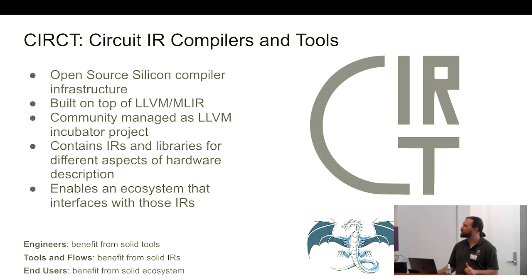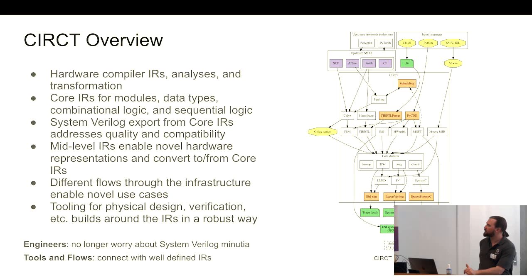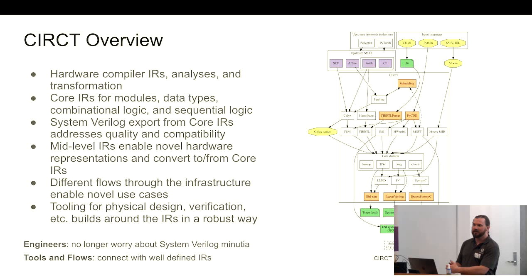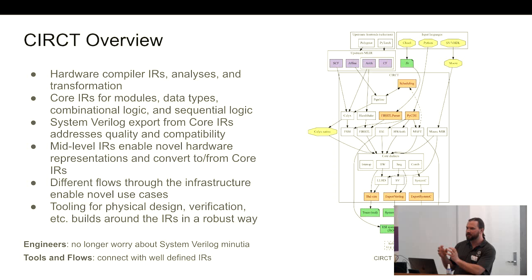Now I'm going to walk through some of the actual concrete IRs that Circuit provides. This is what compiler infrastructure looks like from a really zoomed-out picture — each box is a different IR that we represent, and the arrows show how you can flow through the compiler and do different things. In the middle we have this kind of waistline of core dialects that represent hardware designs close to the RTL level, but at a higher level than Verilog with more specific semantics.